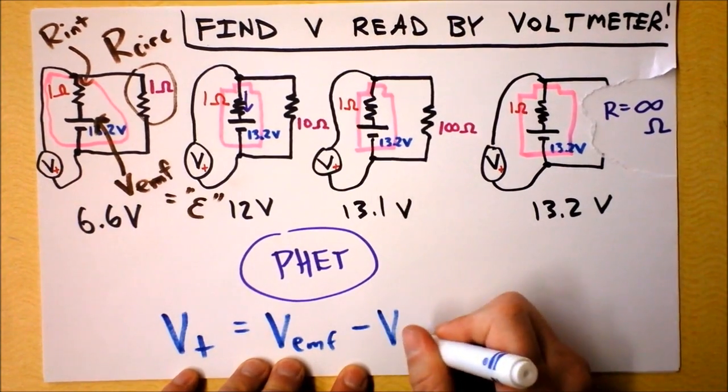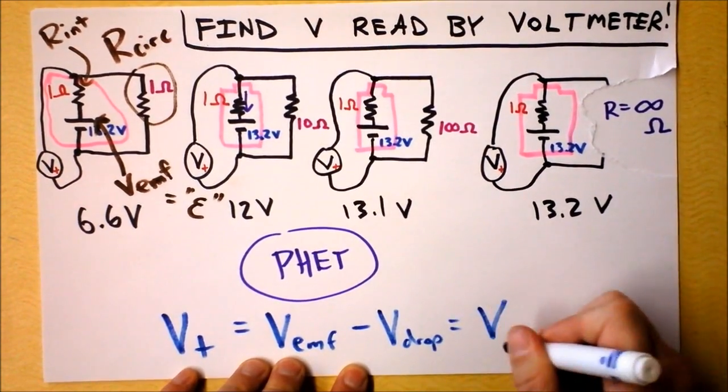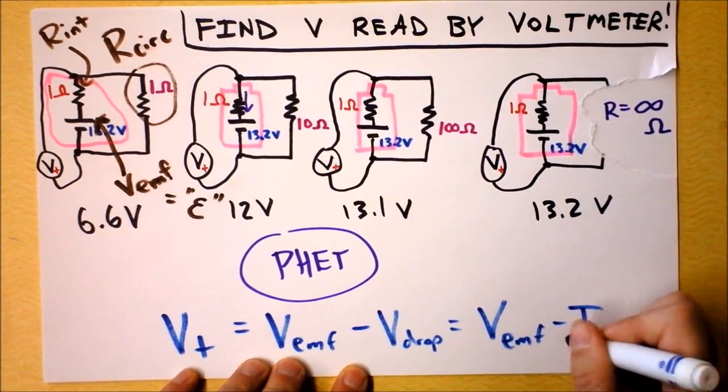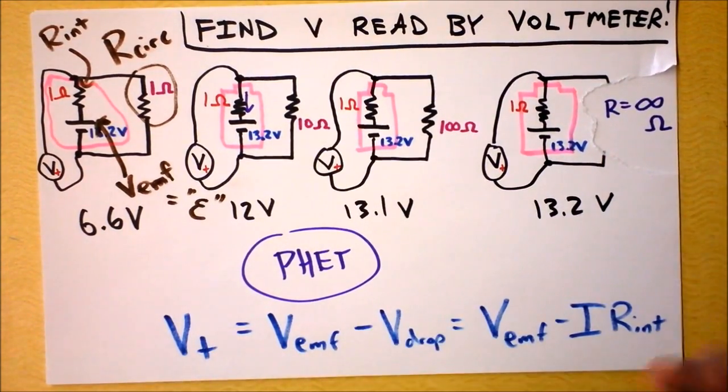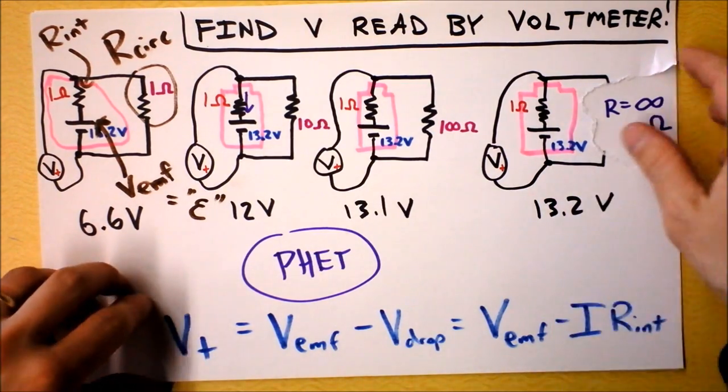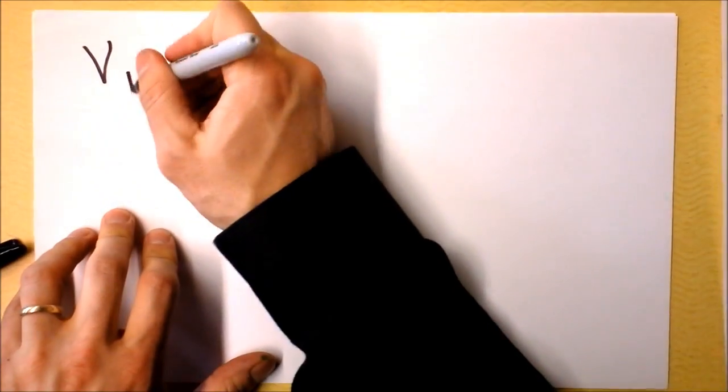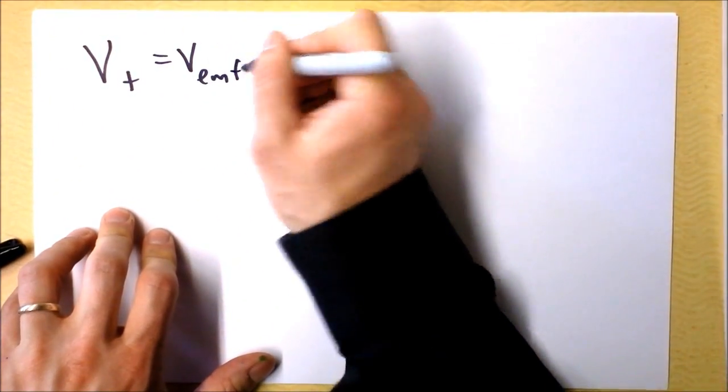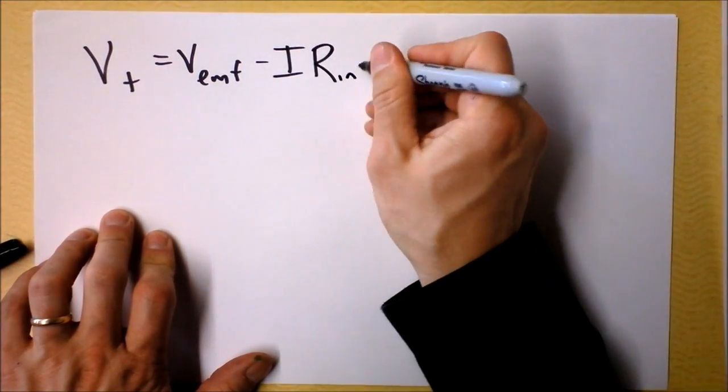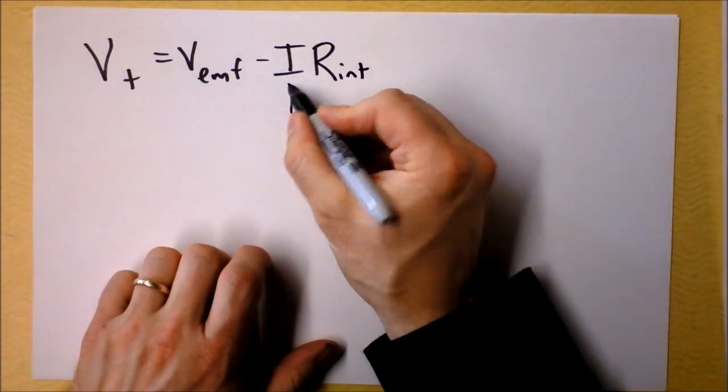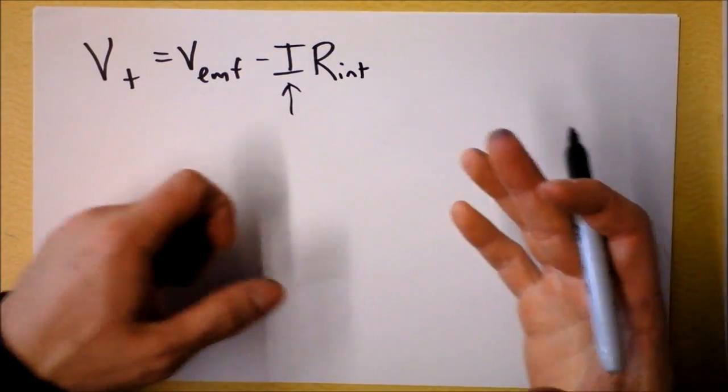If I get an equation for that, then that equation, you're probably already feeling this, that the terminal voltage is the EMF voltage minus the voltage drop across that internal resistance. So I could call it minus the drop, or if I could go a little bit further, I'll say it's V_EMF minus the current through the circuit times the internal resistance.